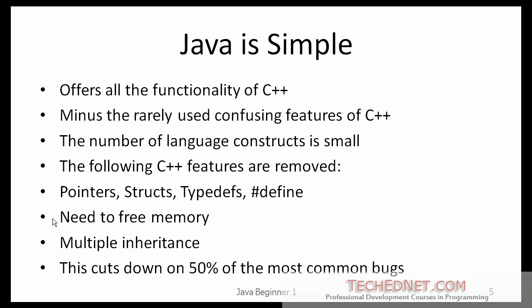There is no need to free memory. If you want to create an object in Java, go ahead and do so. When you are done with it, you can just forget about it — there is no need to worry about removing that object from memory. Java does not support multiple inheritance. I believe the only major programming language that supports multiple inheritance is C++. Based on research they did, by removing these features it may cut down 50% of the most common bugs that occur in C++.